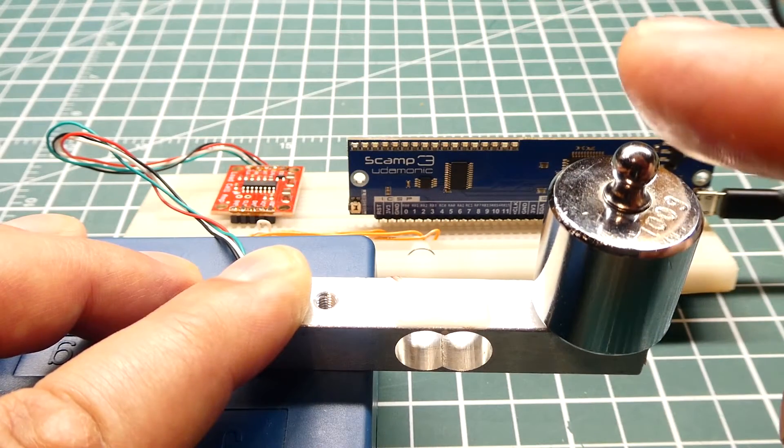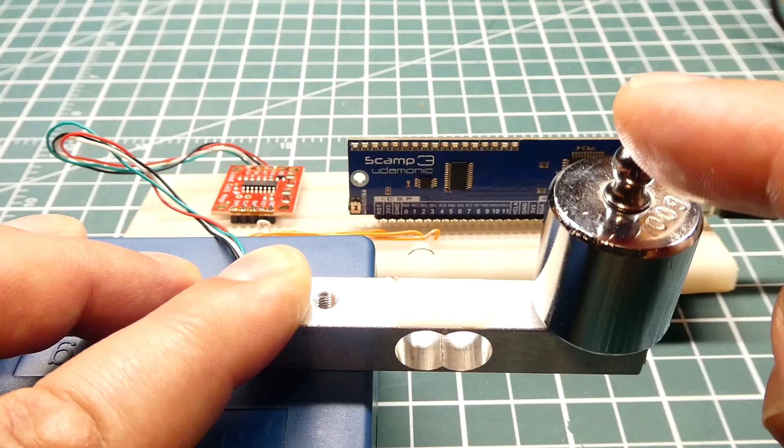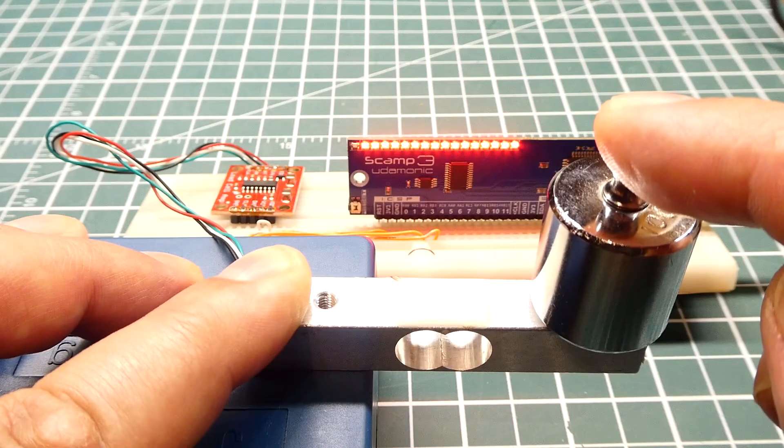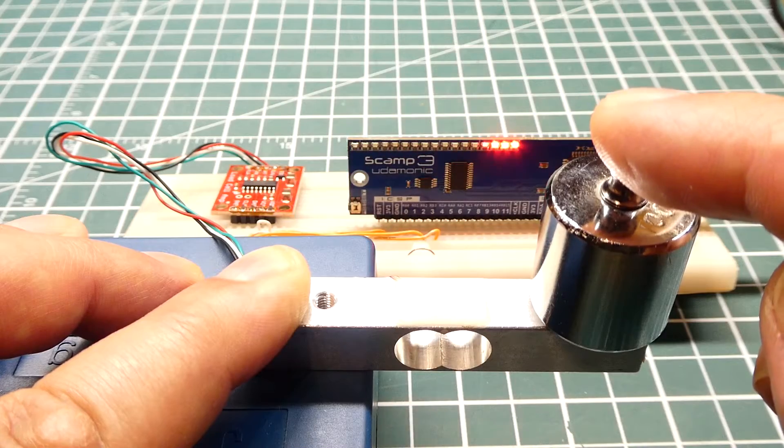So right now it's set for 100 grams, so if I barely touch it you can see the first LED comes on, and if I press hard I could get it all the way up to a thousand grams full scale and all the way back down to a hundred.